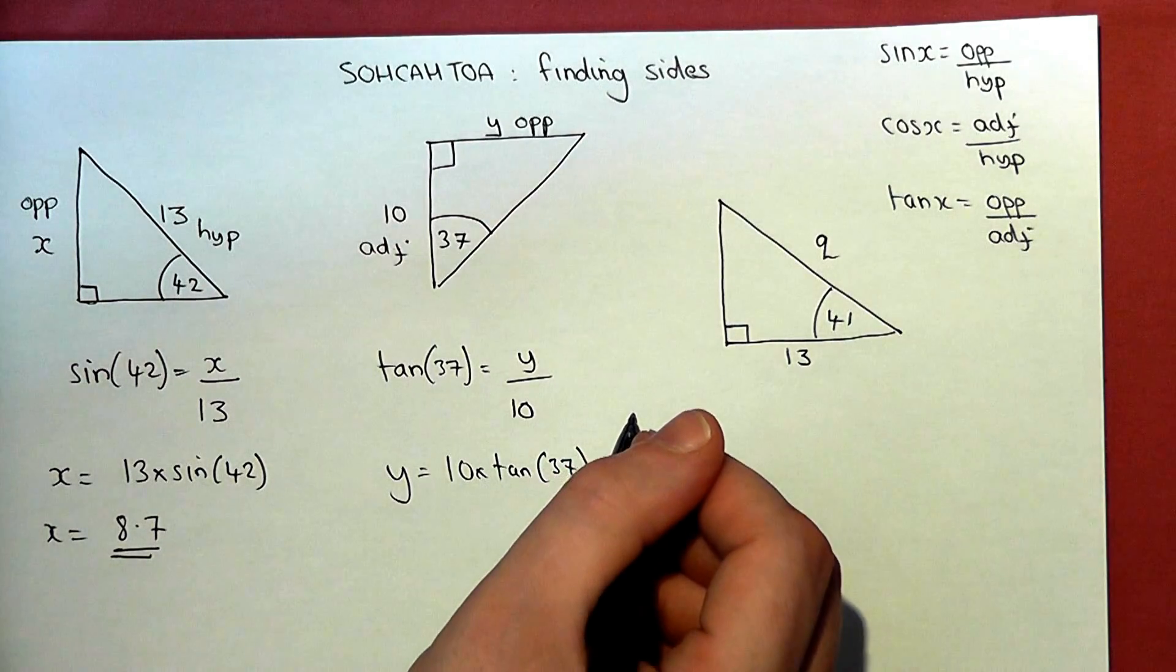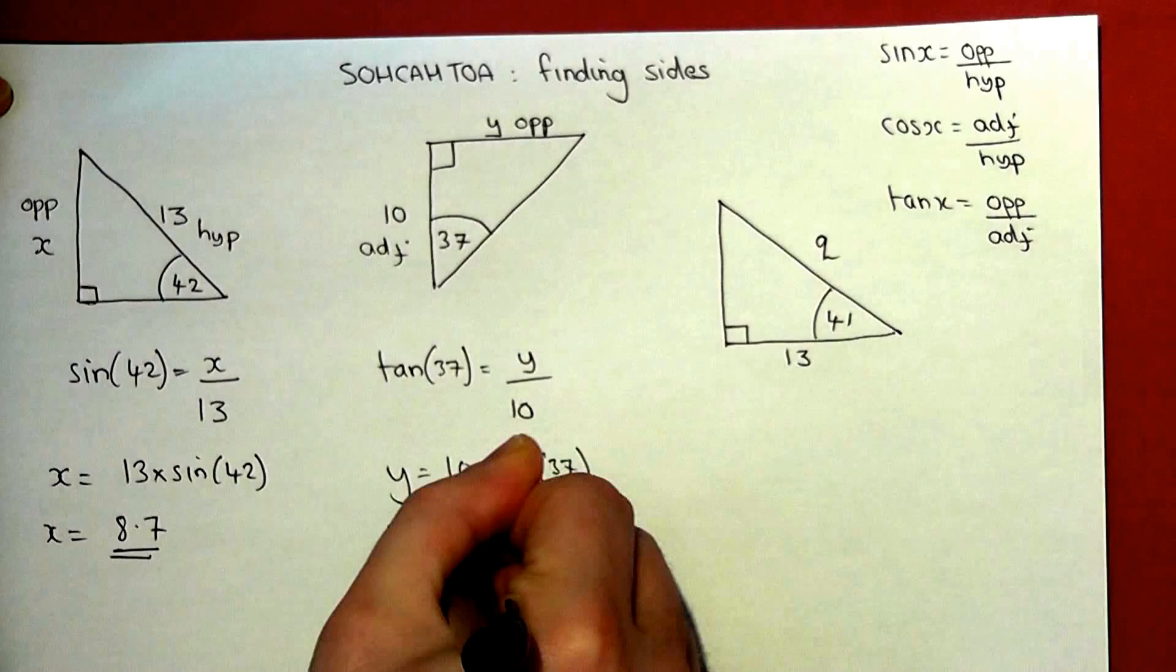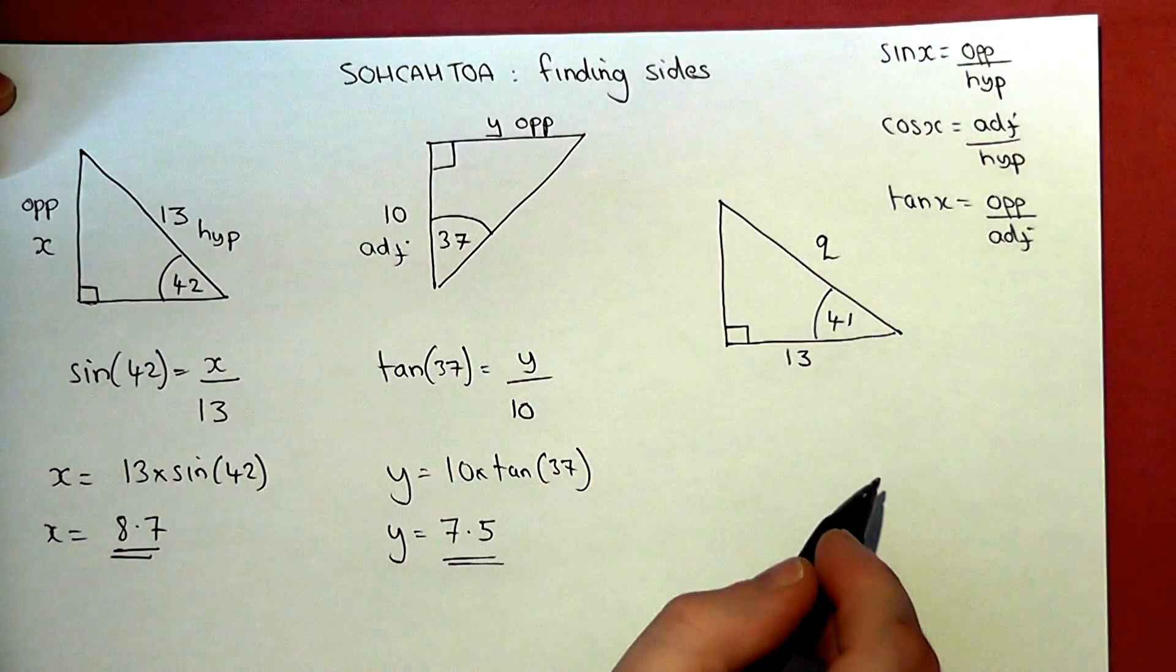10 times tan of 37, and the answer is 7.5. So y has a length of 7.5.